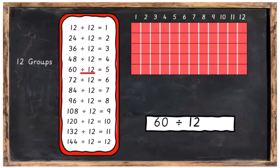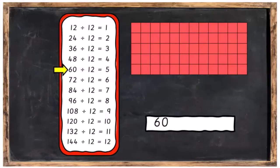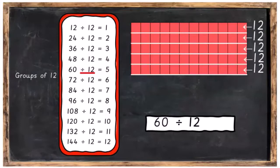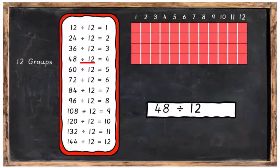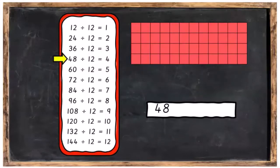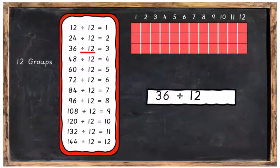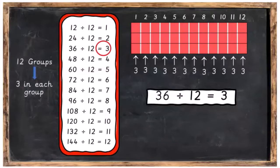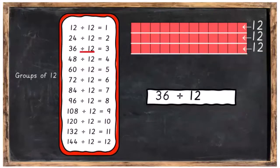60 divided into 12 groups, you're going to have 5 in each group. Or 60 divided into groups of 12, you're going to have 5 groups of 12. Then 48 divided into 12 groups, you're going to have 4 in each group. Or 48 divided into groups of 12, you're going to have 4 groups of 12. 36 divided into 12 groups, you're going to have 3 in each group. Or 36 divided into groups of 12, and you're going to have 3 groups of 12.